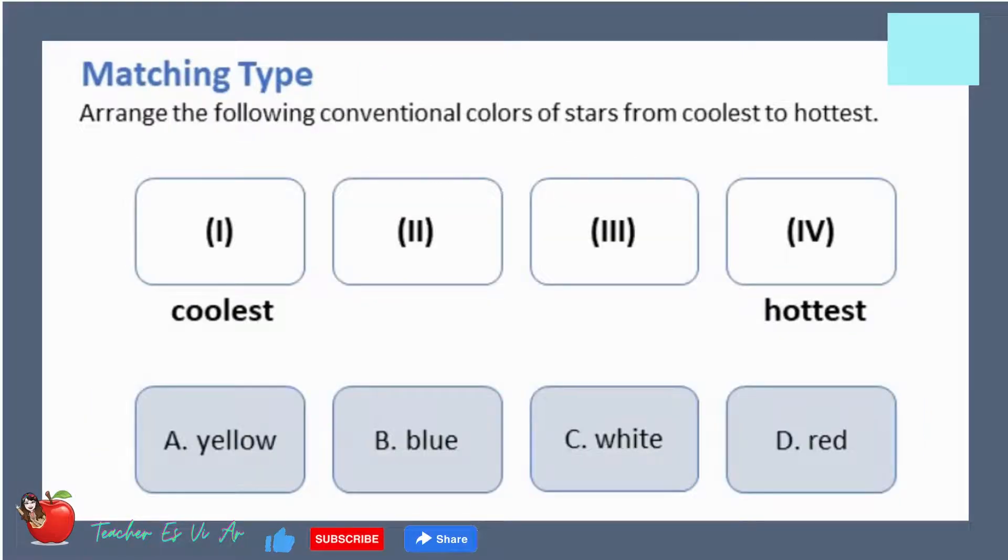Matching type. Arrange the following conventional colors of stars from coolest to hottest. A. Yellow. B. Blue. C. White. D. Red.